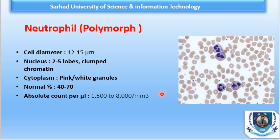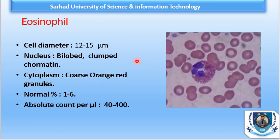The absolute count of neutrophils is 1500 to 8000 per microlitre. The absolute count is the exact count per microlitre. For reference, the normal total leukocyte count (TLC) is 4000 to 11000 per microlitre. The exact number of a specific cell type per microlitre is called the absolute count, always expressed in per microlitre.